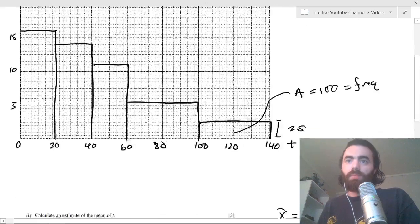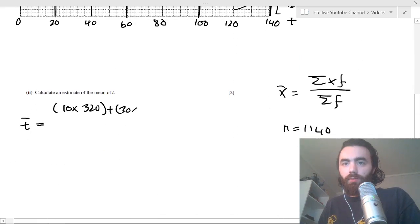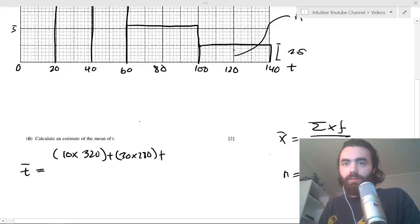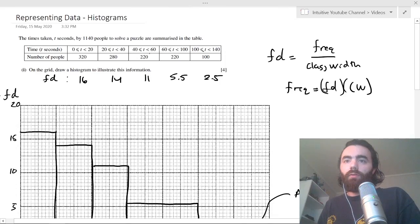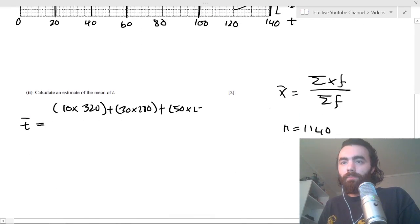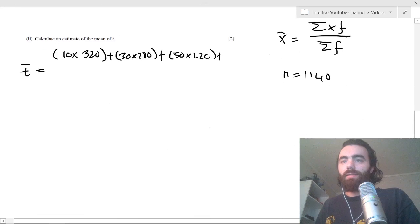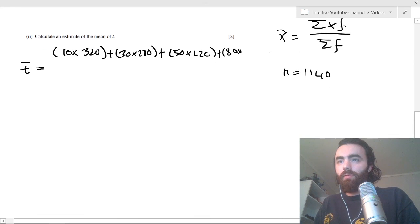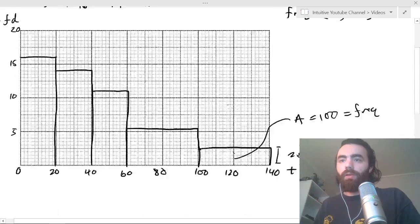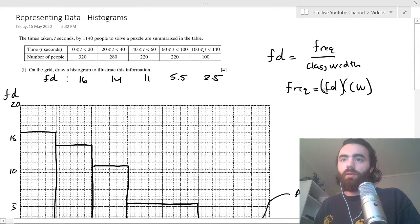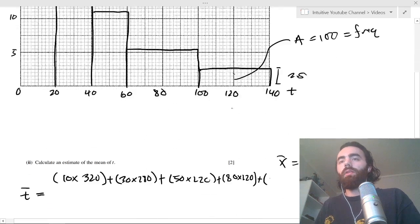And you just do that for all of them. So the next one would be 30 times 280, plus 50 times 220, plus, and this one will be halfway between here, 60 and 100, which is 80. So you do 80 times 220 here. Gonna run out of room, plus, plus the final one, which is 120, halfway between there, 120 times 100.